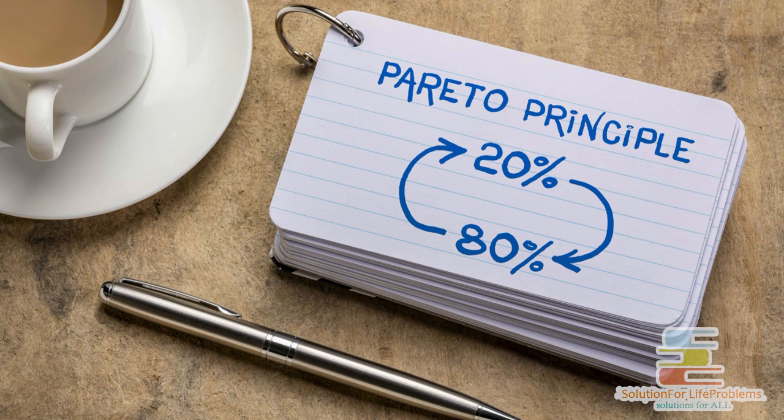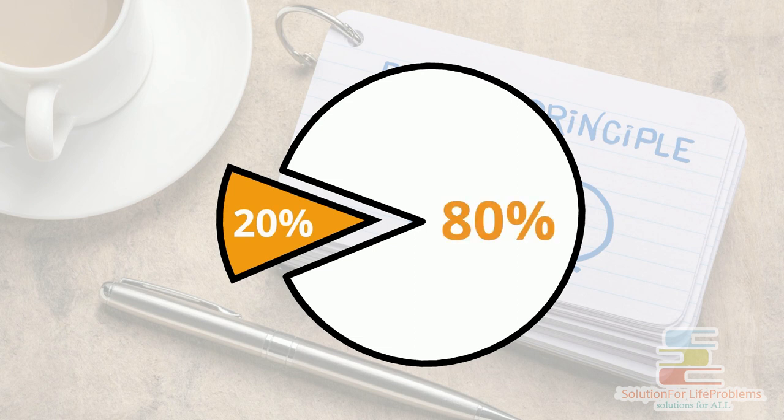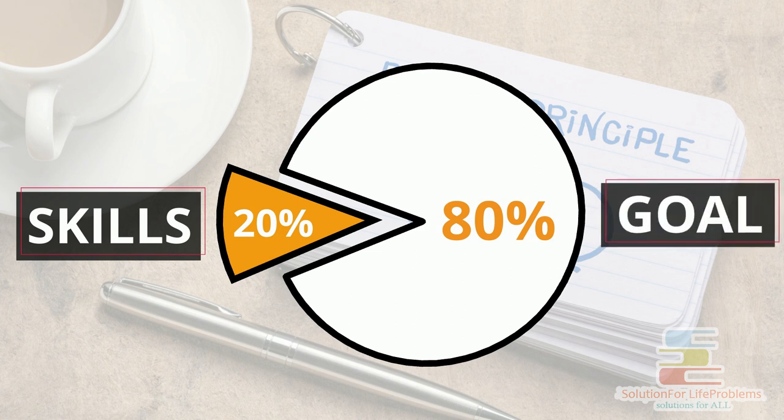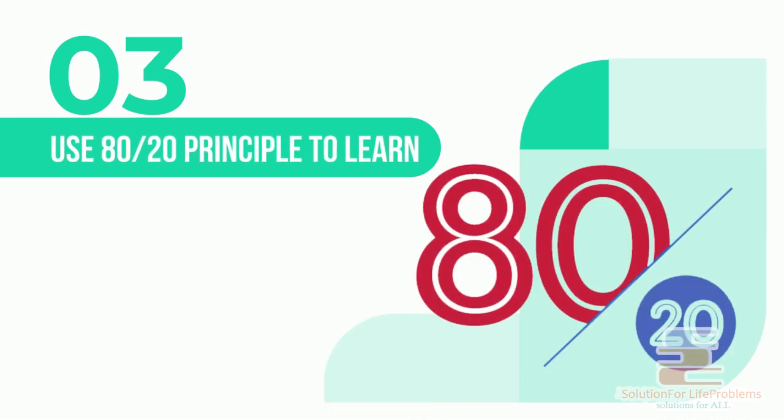Follow the Pareto principle of 80 to 20. 20% of your efforts will bring 80% of the results. Focus on learning that 20% of the skill that can get you 80% of your goal. So smart idea three, use the 80 to 20 principle to learn.